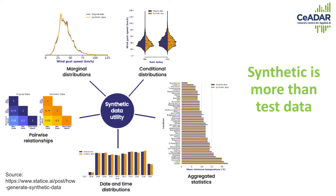Earlier, synthetic data was viewed more as a testing tool. So if you wanted to test your database, your code, or you wanted to port your data set and needed test data for that, you would use synthetic data. But now synthetic data generation techniques have paired up with machine learning methods, so they have become more advanced and can learn more features about the underlying data. For example, synthetic data can learn about the relationships between different variables in your data set. It can also learn about aggregated statistics and replicate those — data and time distributions, conditional distributions, etc. So synthetic data has become more and more representative of the actual data set, with the added advantage that privacy is protected, because all the information in that data set is synthetic and you cannot link it to a real person.